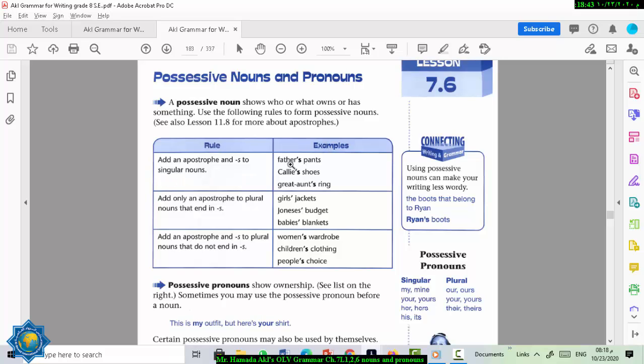For example, father's pants. Father is singular. So you put apostrophe S. And the pants belong to the father. So because the noun belongs to a singular noun. So you put apostrophe S. Kyle's shoes. Great aunt's ring.